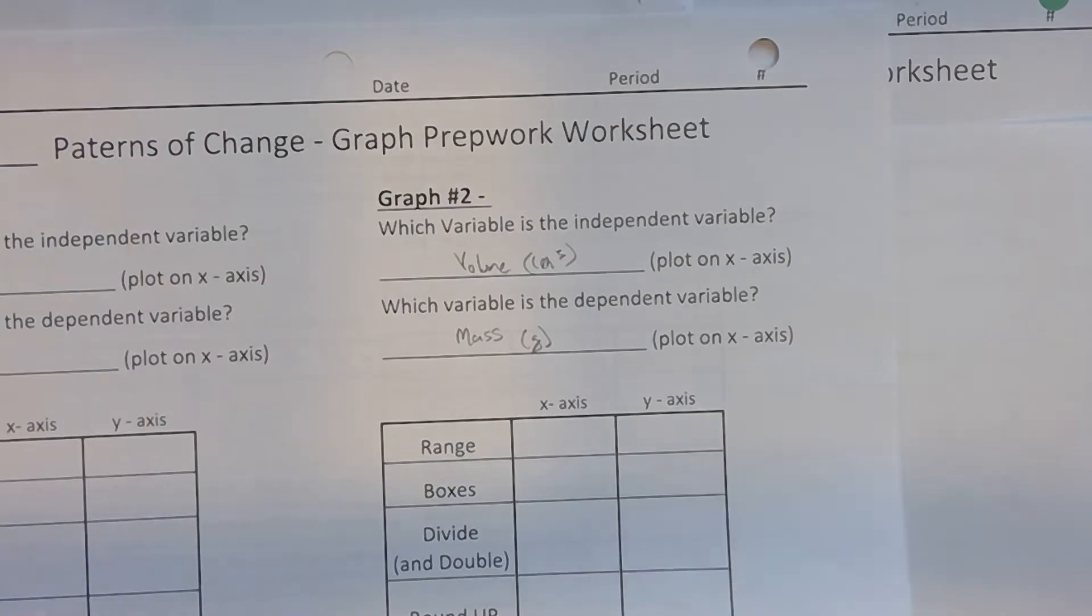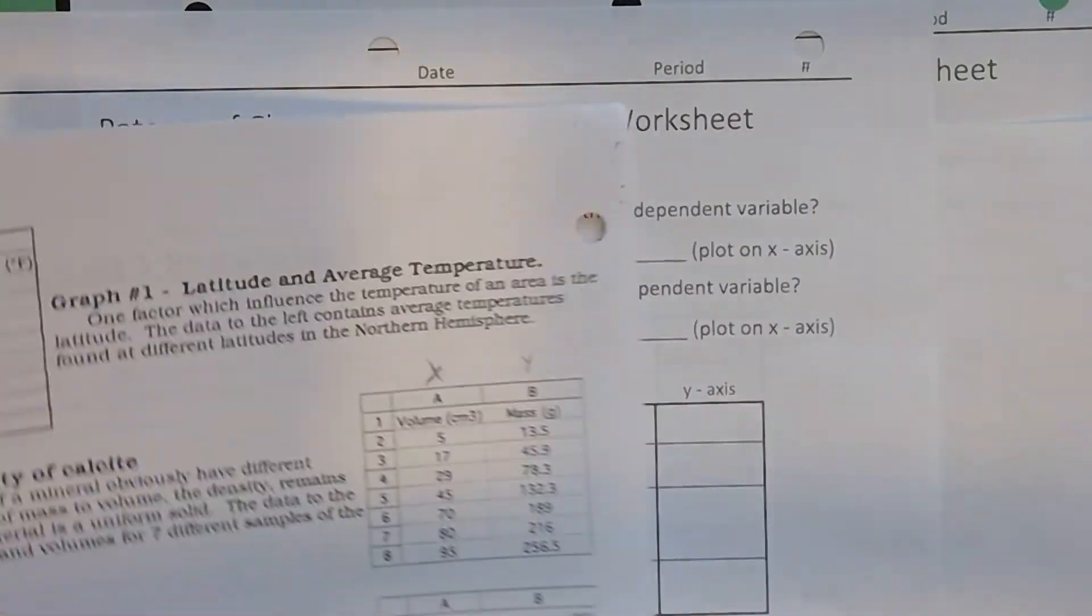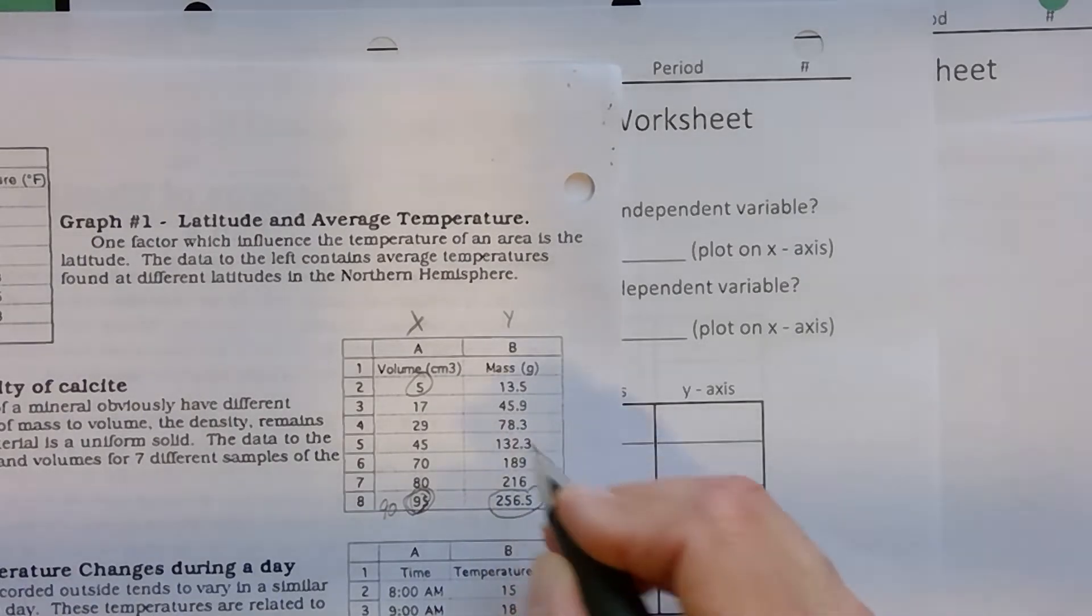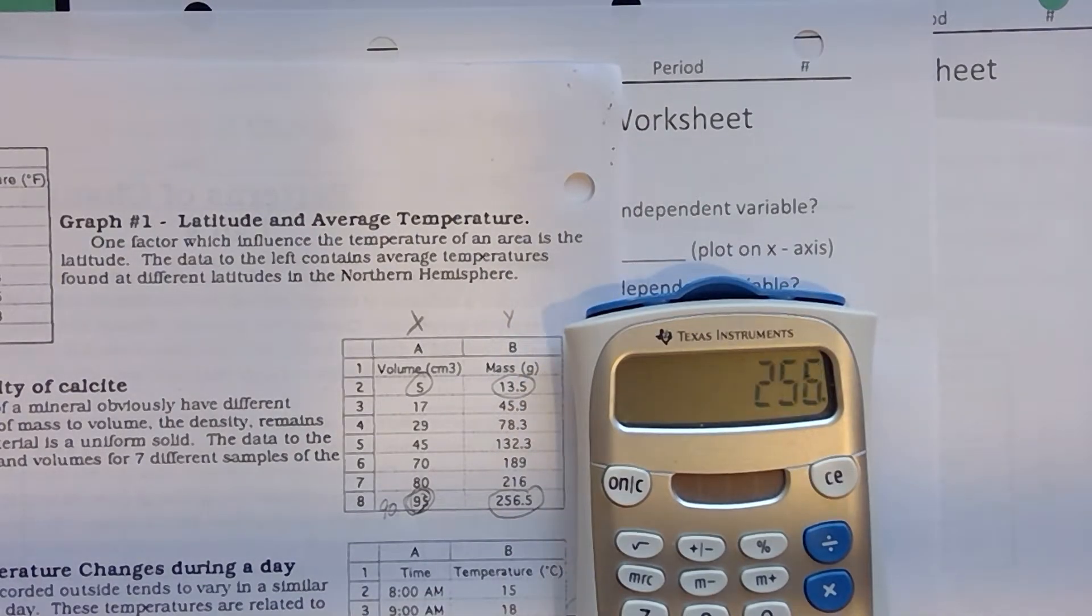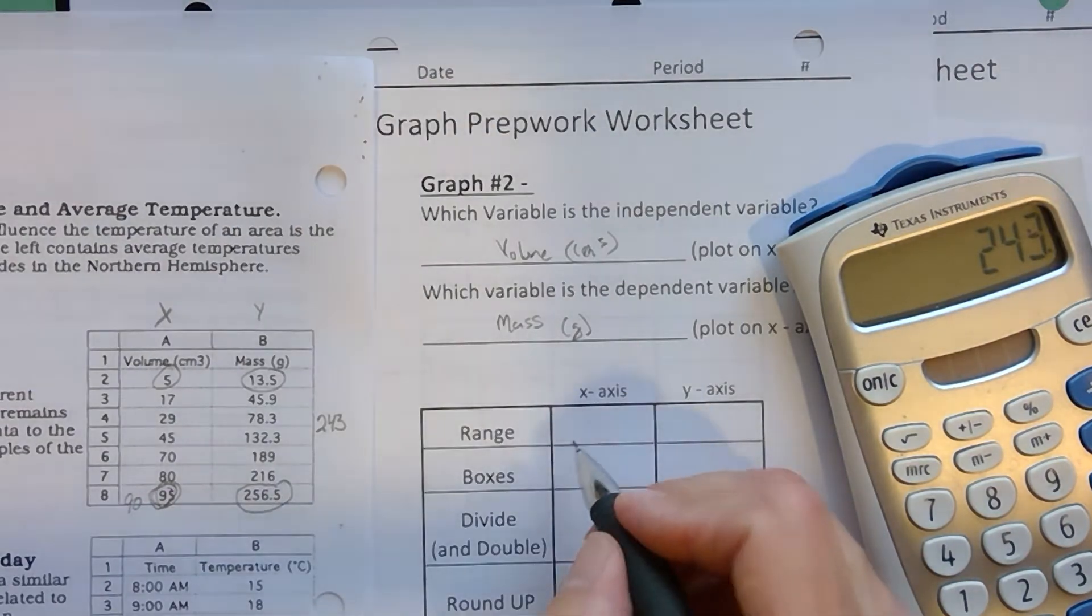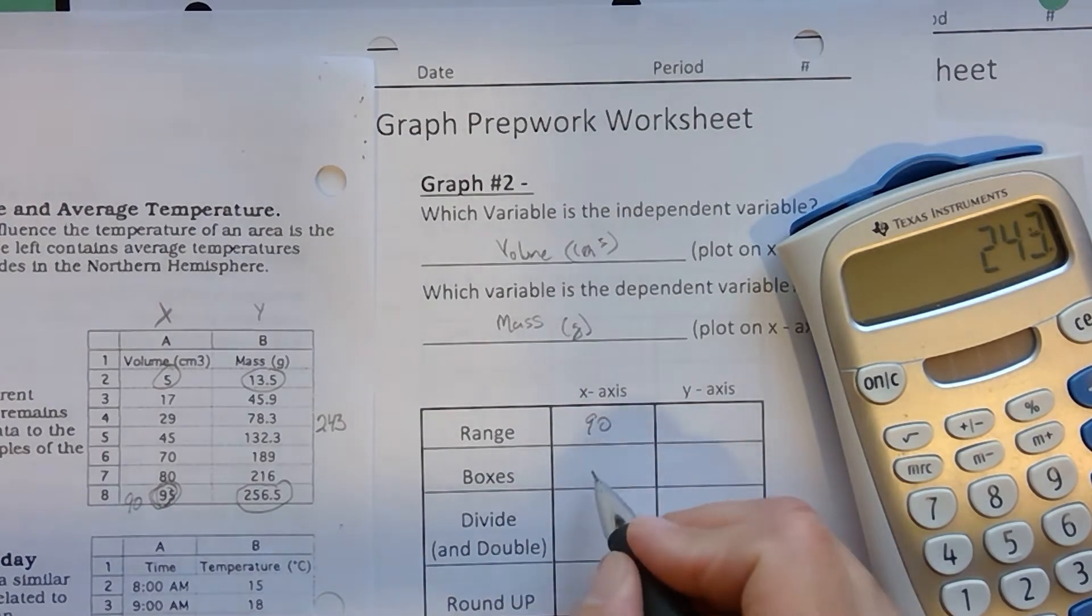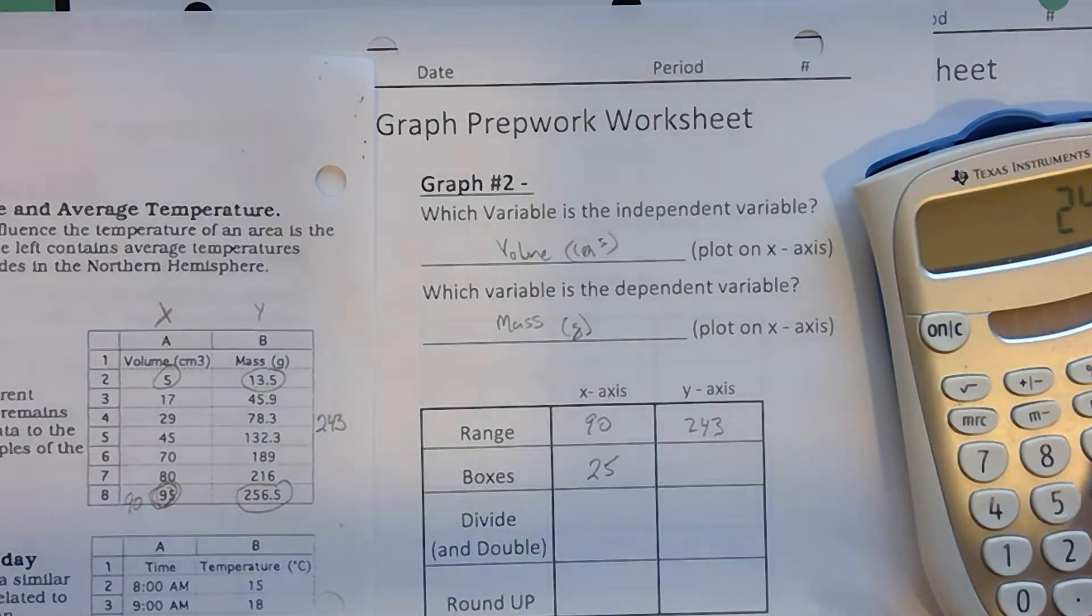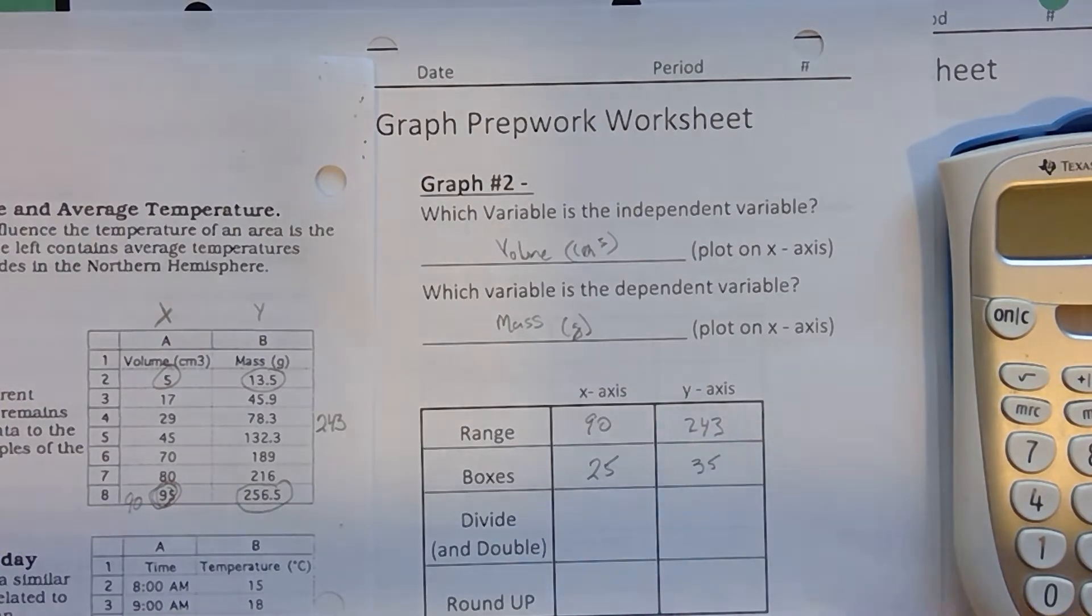Range, you do the maximum minus the minimum. So I'm looking at my data table and I'm circling 95 and 5. When I subtract them, the range of this data is 90. Over here, I have 256.5 and 13.5. I can toss those into my calculator. 256.5 minus 13.5. And I find the range on this side to be 243. So I know that I've got 90 things that are going to try to fit into 25 boxes. And I have 243 is the difference between my points. And I have to try to squeeze that into 35 boxes.